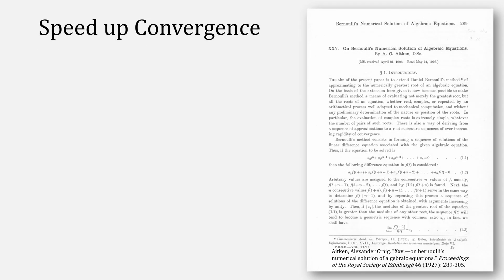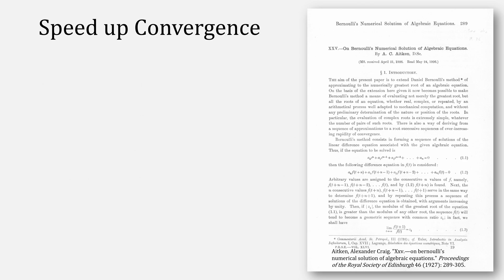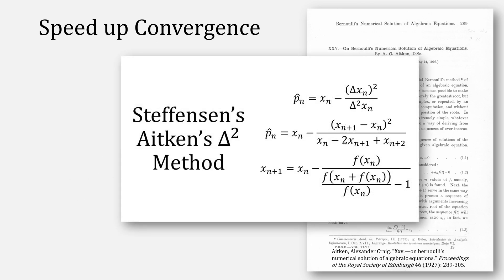On to that first question about speeding up convergence. We actually have a solution from an earlier video on Stephensen's method with Aitken's delta squared. Originally, Aitken's delta squared method was created as a way to speed up Bernoulli's method.